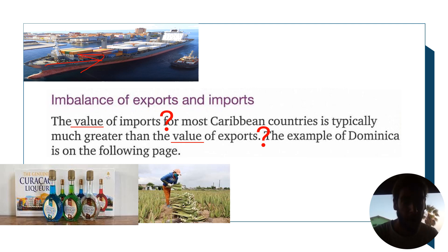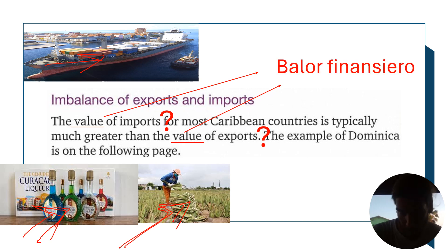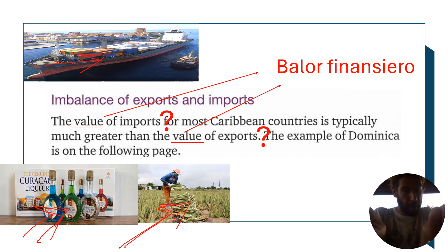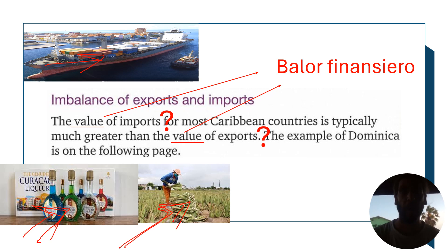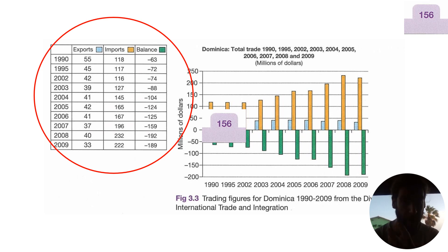For example, we import from Europe, America, and Trinidad, and we export to the rest of the world — like aloe vera and Curaçao liqueur to Holland. The financial value of things coming in is much larger than the things we are exporting. On the next page you see the example of Dominica, and this is important because you have to be able to read statistics and graphs and take information out of them.